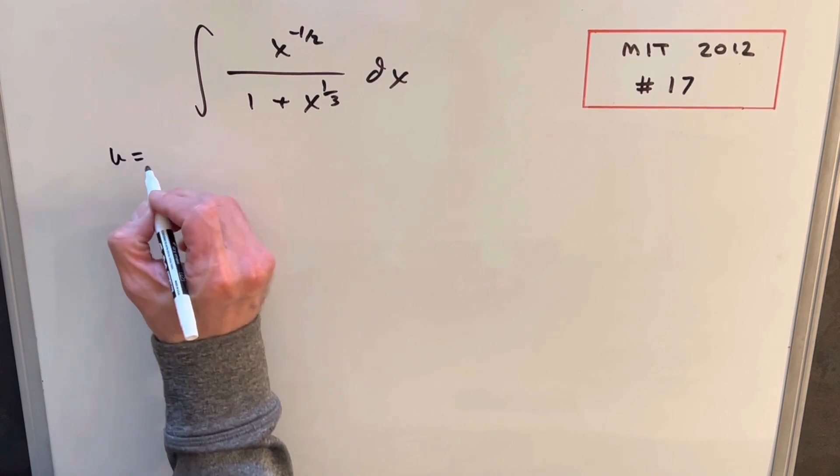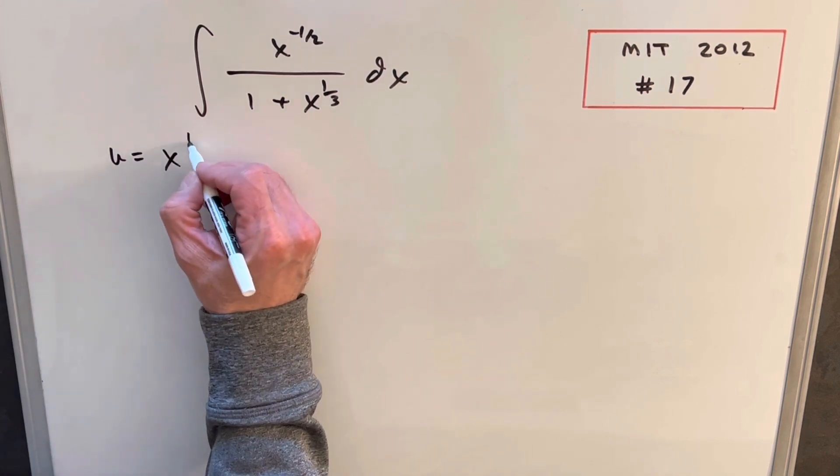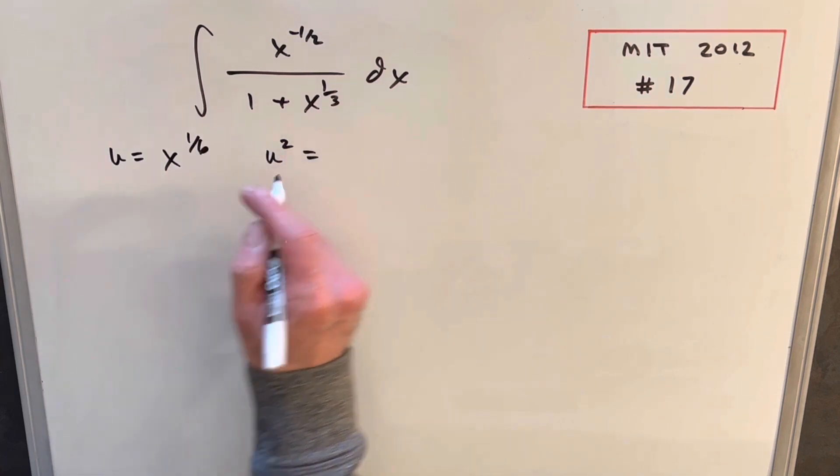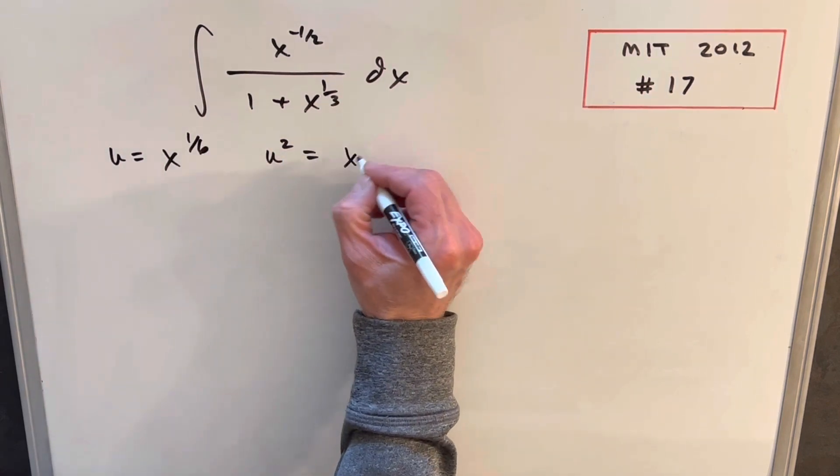What I wanted to look at was a u substitution like u equals x to the 1 sixth. And I do that because u squared, if we square x to the 1 sixth, we have x to the 1 third.